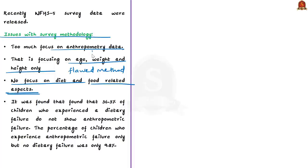Let us see from NFHS-4 data on how diet-related data can capture the reality better than anthropometry-related data. It was found that 36.3% of children who experienced a dietary failure do not show anthropometric failure. The percentage of children who experienced anthropometric failure only but no dietary failure was only 9.8%. So, we can say that anthropometric-centric measures run the risk of excluding such children from policy discussions. What we need is a combined method because children experiencing both dietary and anthropometric failures is at an alarming rate of 44%.